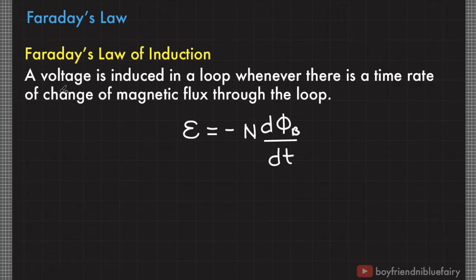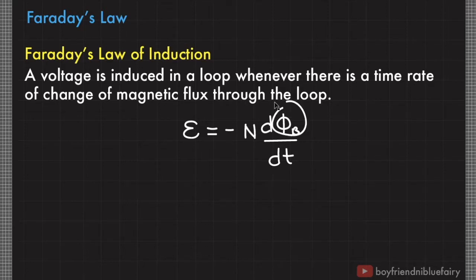This law states that a voltage is induced in a loop whenever there is a time rate of change of magnetic flux through the loop. Mathematically speaking, the voltage or EMF produced by the time rate of change of flux, symbolized by E, is equal to the time derivative of the magnetic flux. If you have N number of loops, their effect is additive.